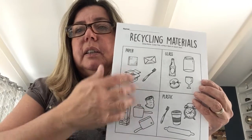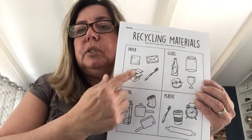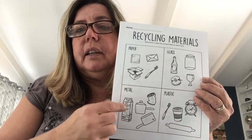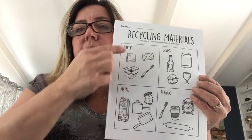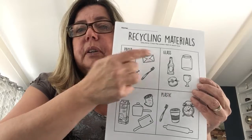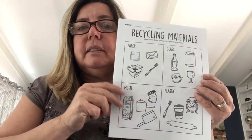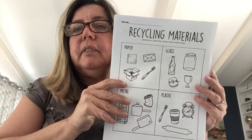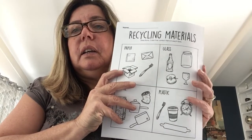Since we're talking about recycling, your child is going to look at every item and pick which one is paper, glass, metal, or plastic — which one of these is made out of a material that can be recycled.